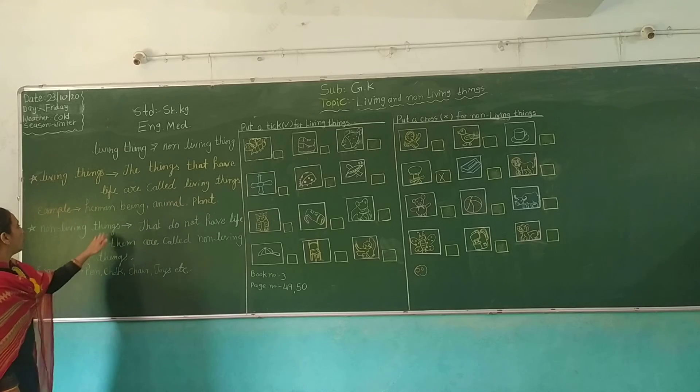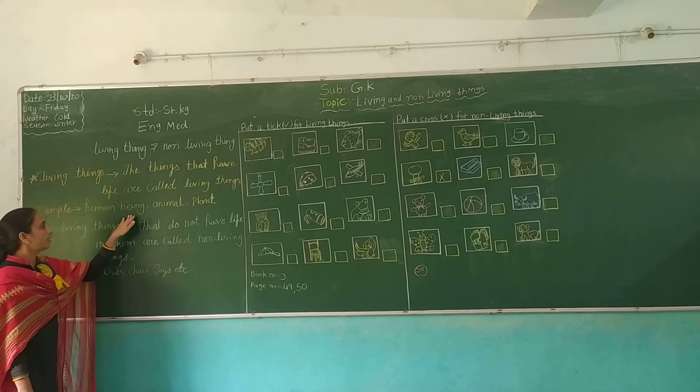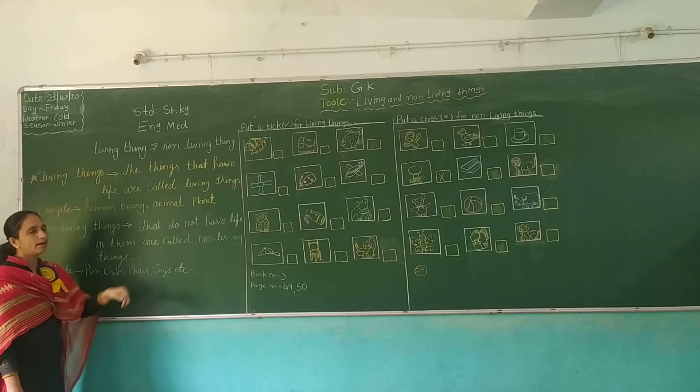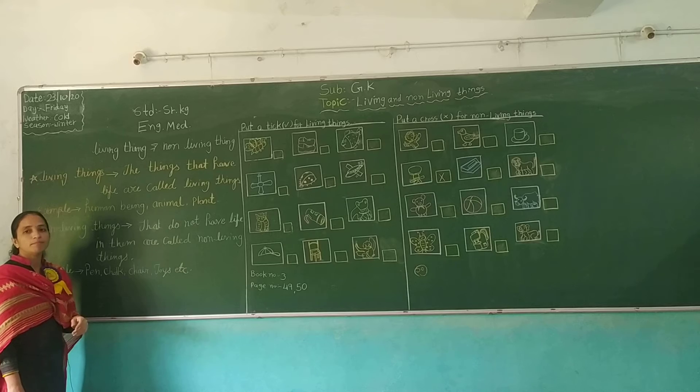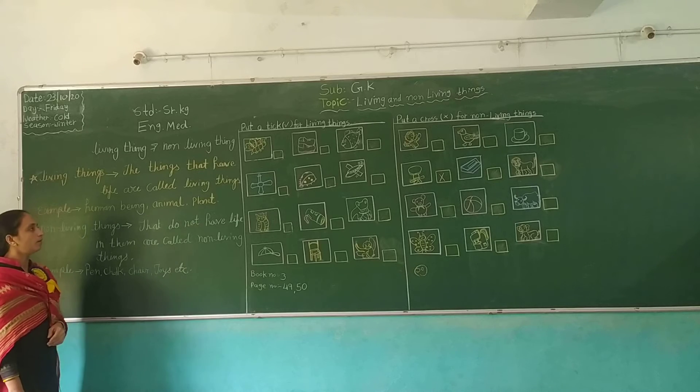For example: human beings, animals, plants, and birds are all living things.